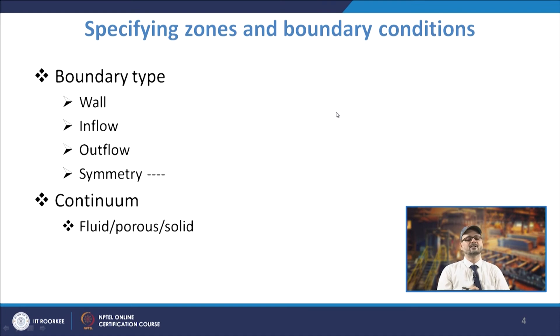In the continuum definition, you define the domain wherever you have fluid — you specify it as occupied by fluid. Wherever you have porous materials, you define that region as porous material, and if there are blocks or solid portions, you need to define them as solid. You can define these things either while making the geometry or while specifying the boundary conditions.